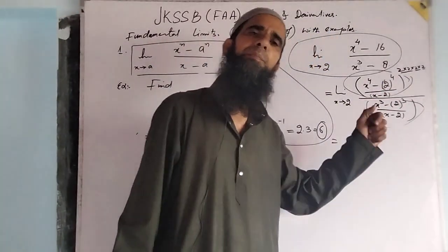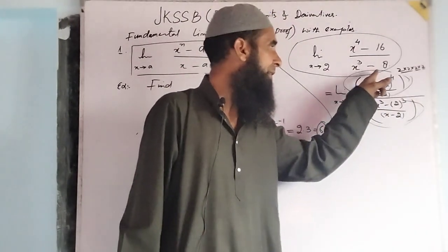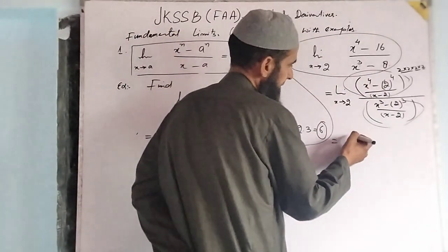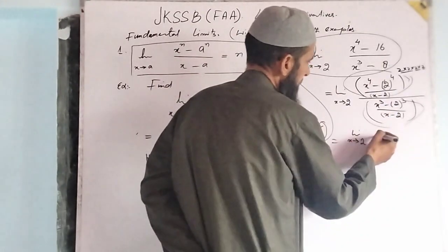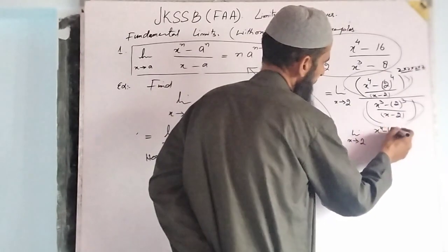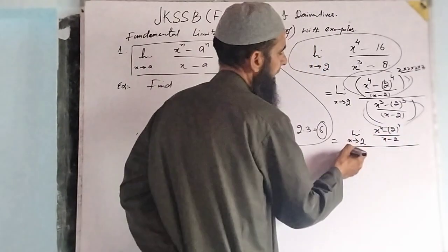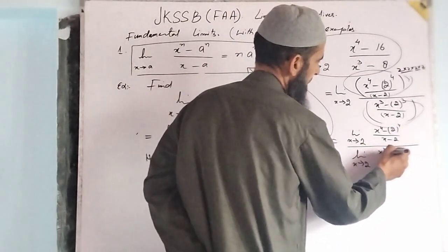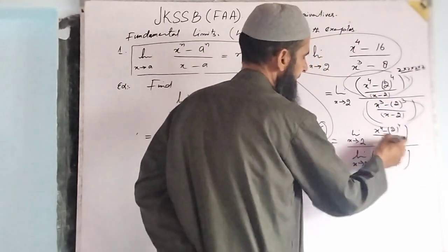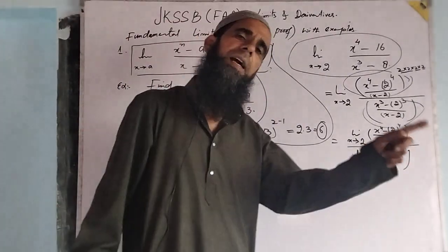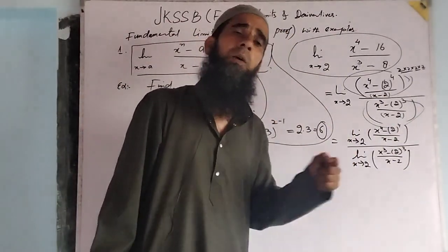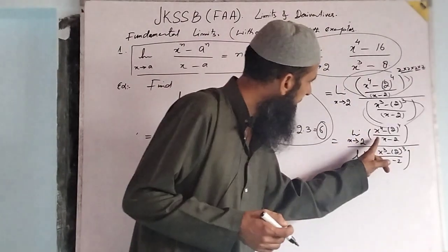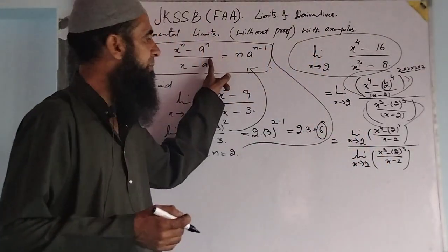As discussed in the previous lecture, the limit of a division of functions is equal to the division of the limits of the functions. So this equals limit x tends to 2 of x raised to power 4 minus 2 raised to power 4 divided by x minus 2, all divided by x cubed minus 2 cubed divided by x minus 2. Now compare the numerator and denominator each with the fundamental limit.